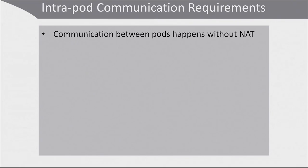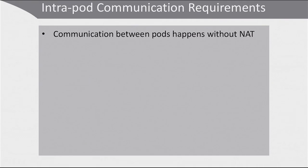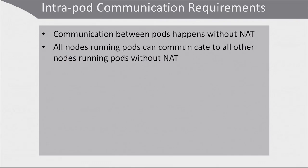Now let's talk about intra-pod communication requirements. The challenge is that communication between pods happens without NAT. NAT is network address translation, and network address translation means that what is happening within a pod goes through a network address translator. Network address translation for intra-pod communication is bad — you cannot have any NAT. This imposes the requirement that all nodes running pods can communicate to all other nodes running pods without NAT.